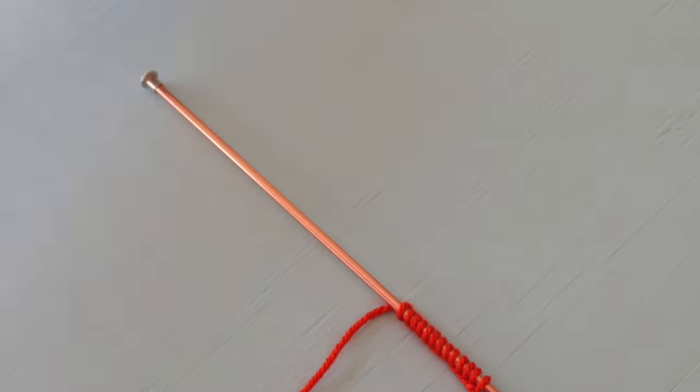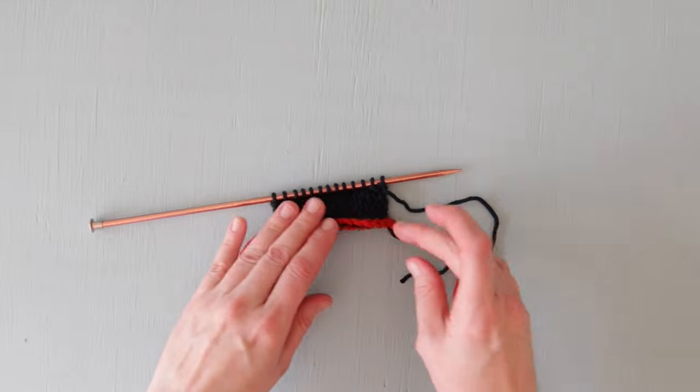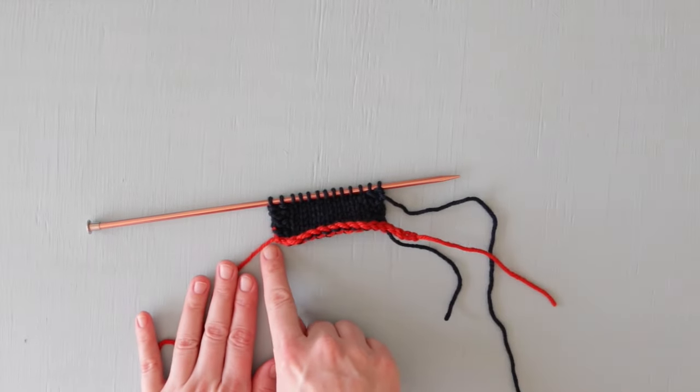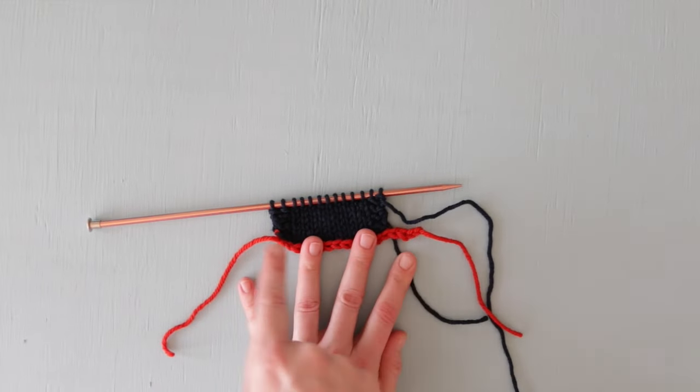Alright, so that's how we cast on provisionally in one step, but what do we do when we need to access those stitches again? Let's pretend using this example that we're ready to take this provisional cast-on out. So what we do is we look for the end with the extra chain stitches.